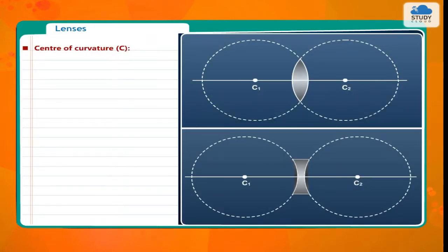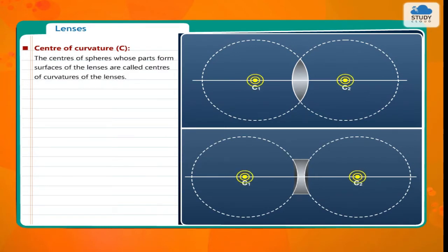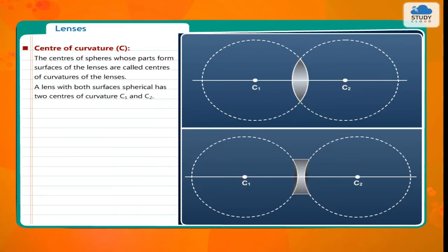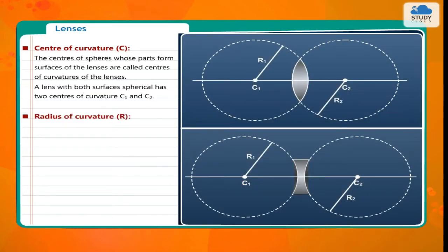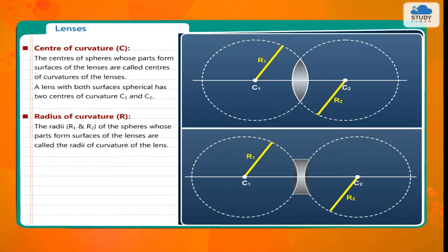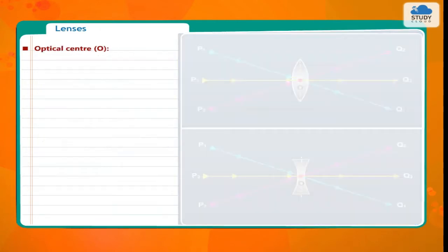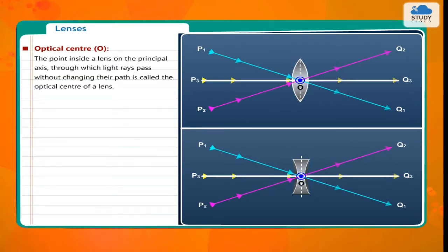The centers of spheres whose parts form surfaces of the lenses are called centers of curvature of the lenses. A lens with both surfaces spherical has two centers of curvature C1 and C2. The radii R1 and R2 of the spheres whose parts form surfaces of the lenses are called the radii of curvature of the lens. The imaginary line passing through both centers of curvature is called the principal axis of the lens. The point inside a lens on the principal axis through which light rays pass without changing their path is called the optical center of the lens.